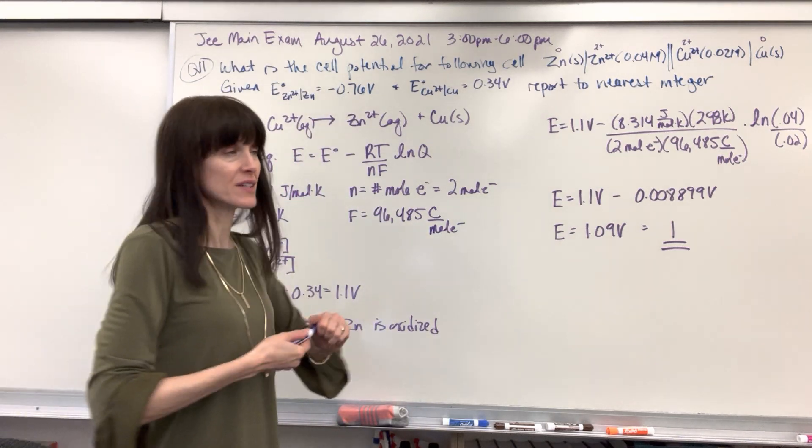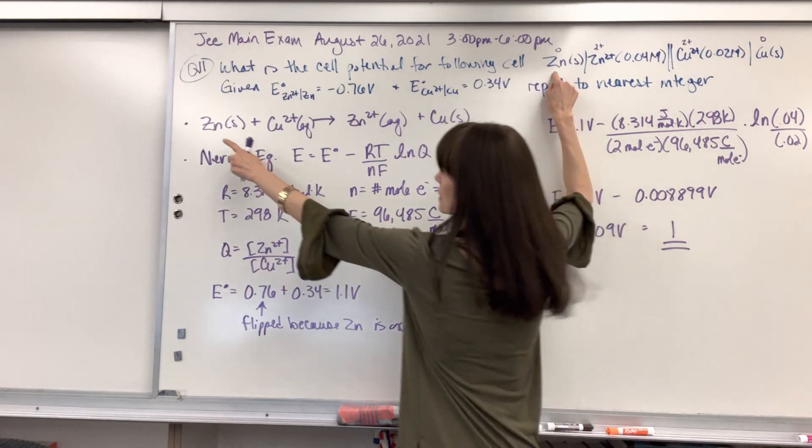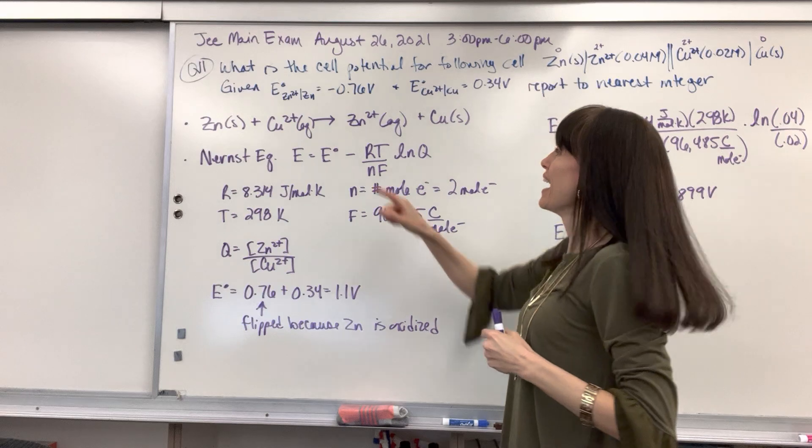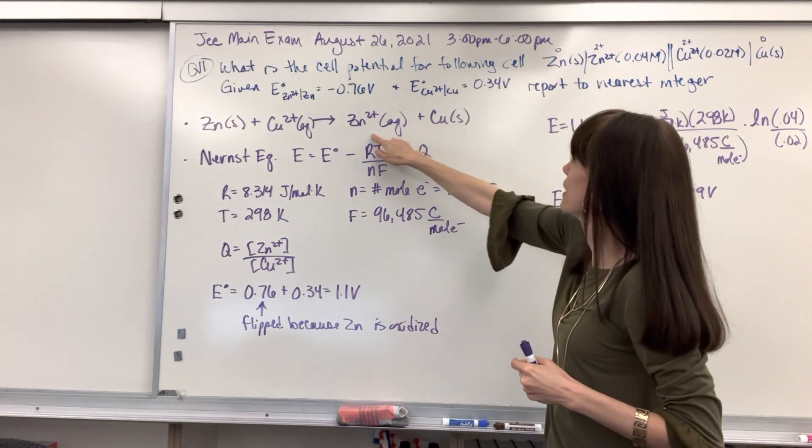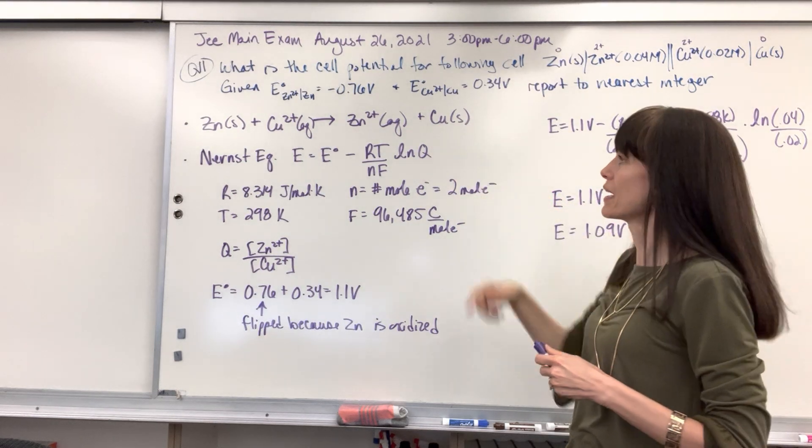So writing this down, let's look at our electrochemical equation. Here's your zinc as the reactant and then the copper two plus as the reactant. And that's going to yield the zinc two plus ion plus the copper solid right here.